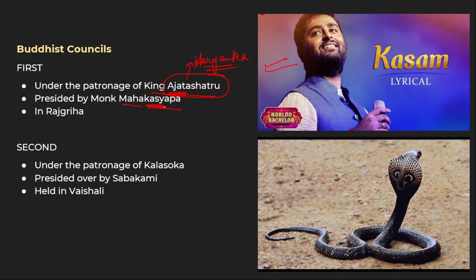There is a new song of Arijit Singh in Bablu Bachelor called Kasyap — so Kasyap helps you recall the presiding monk. Arijit Singh means King Ajat Shatru. This first council was held under the patronage of King Ajat Shatru and it was presided by Maha Kasyap, and it was held in Rajgriha. Arijit Singh is the king of Bollywood music — so 'Raj' in Rajgriha connects to king, helping you remember the venue.